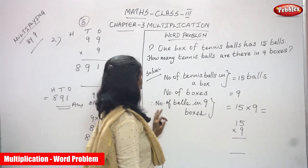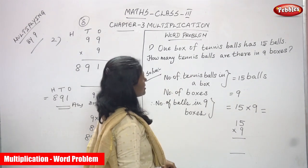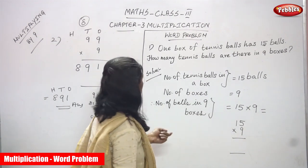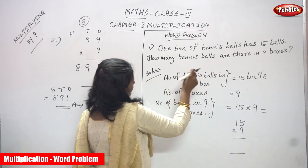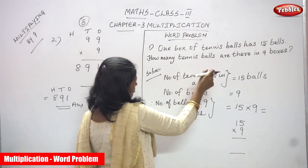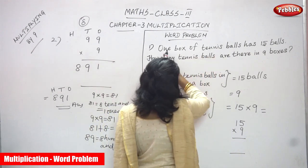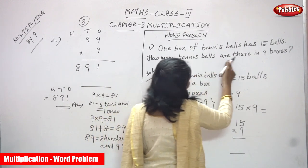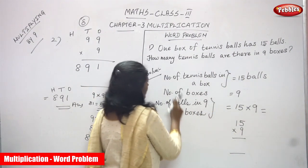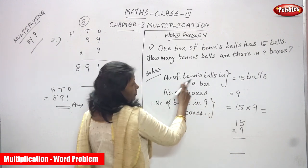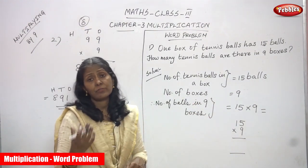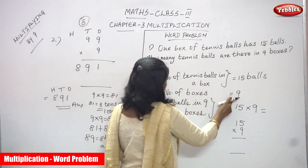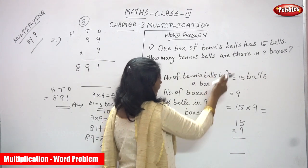Now we are going to see the word problem. 1 box of tennis balls has 15 balls. How many tennis balls are there in 9 boxes? The number of tennis balls in a box is 15 balls. That means there are 15 balls in a single box.